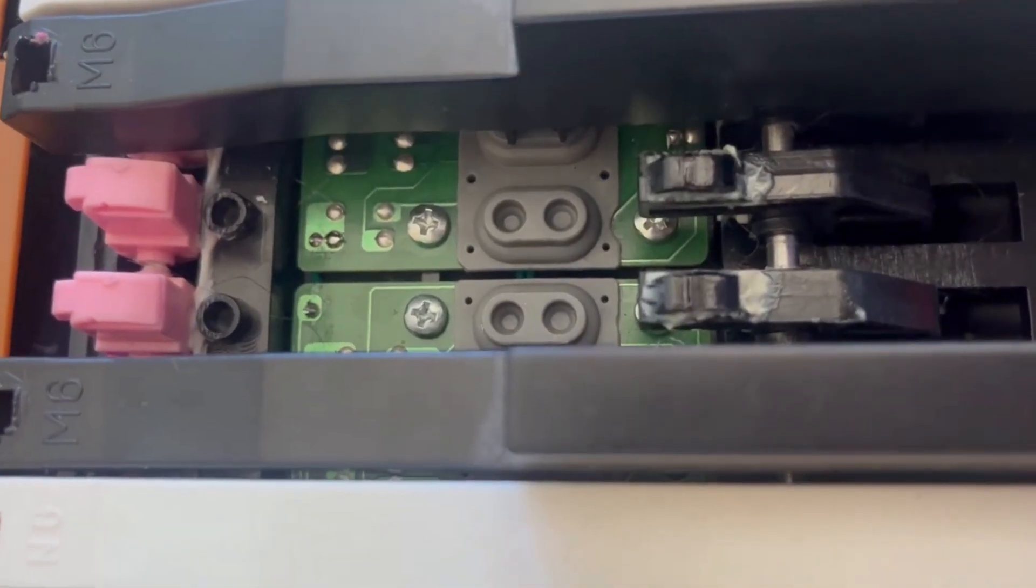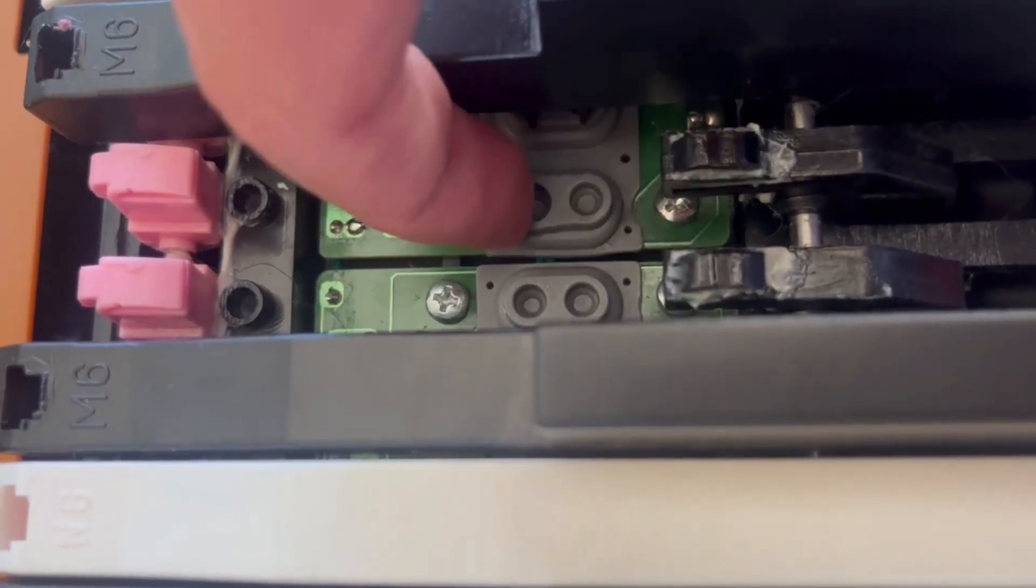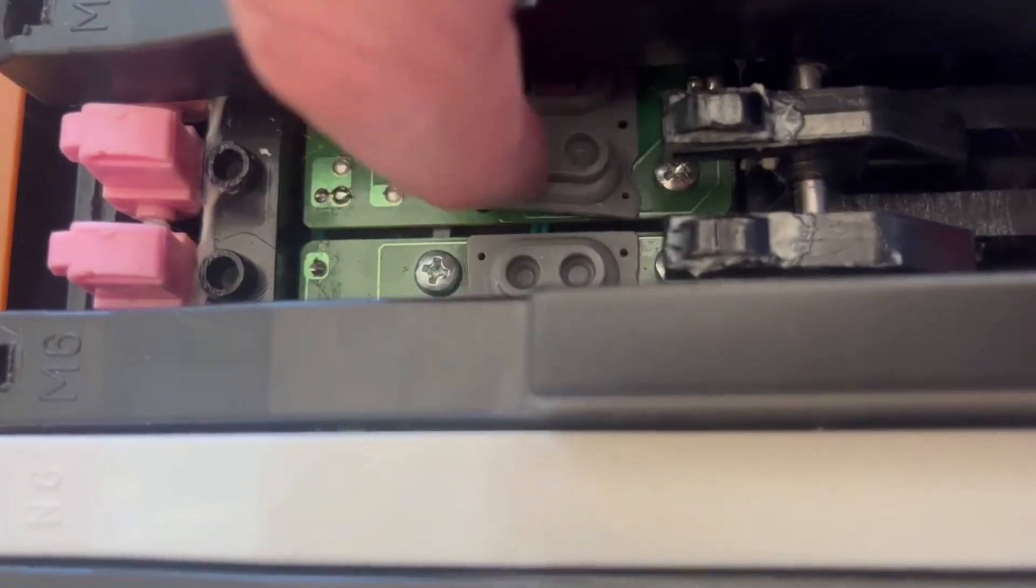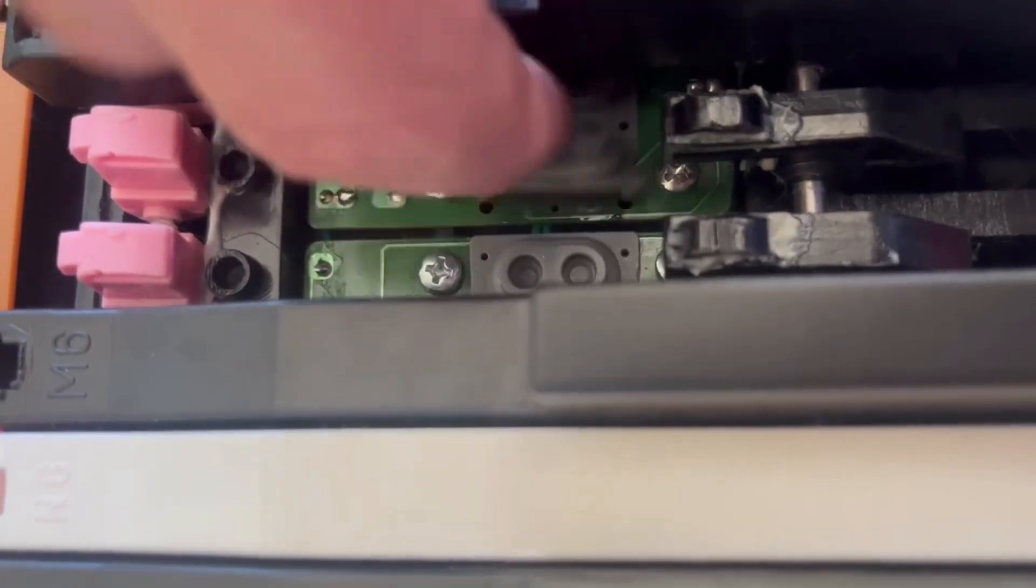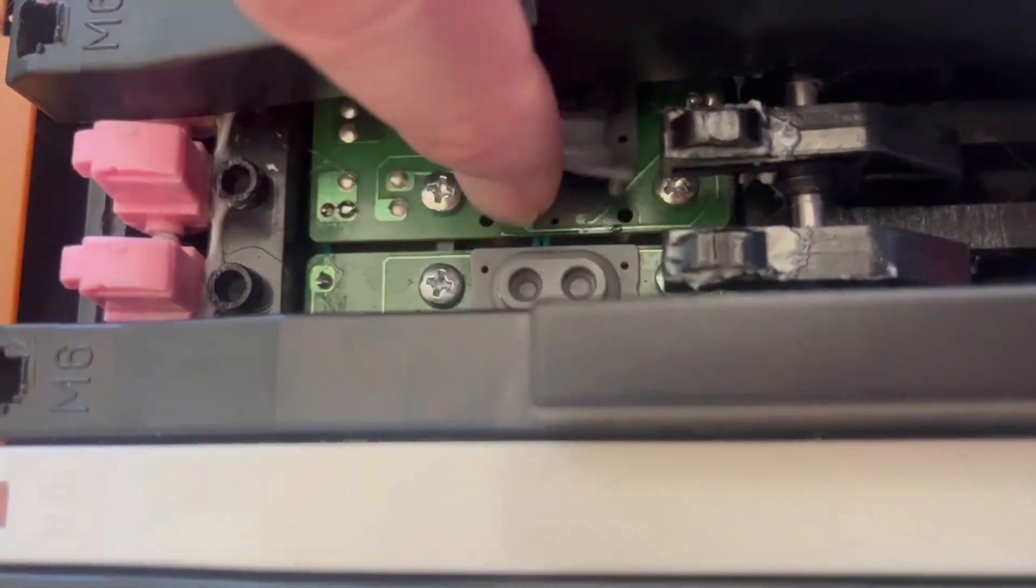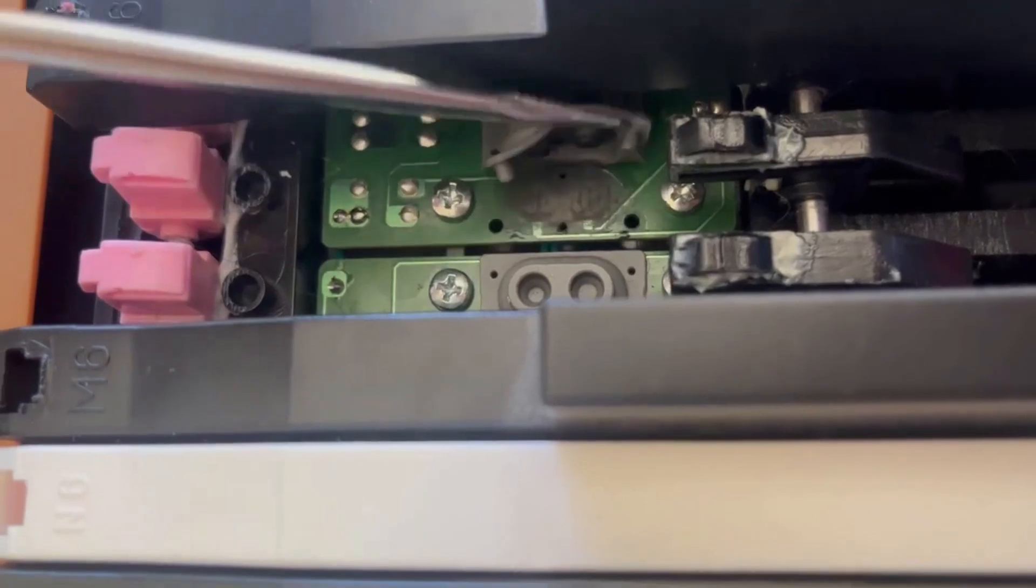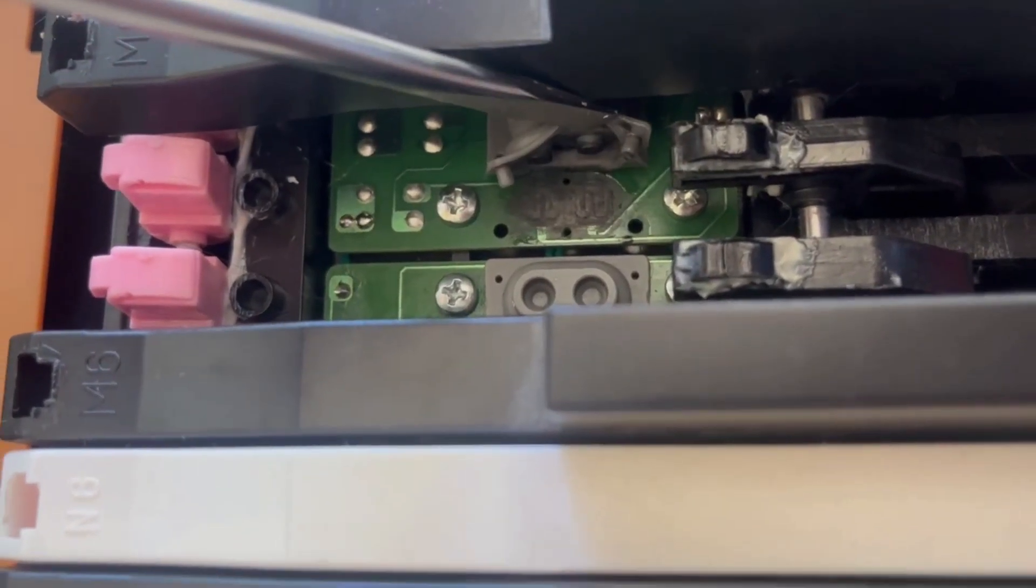You will see underneath the key there is this rubber, and what has worn out is underneath the rubber the contact is worn out. By lifting it up, that is where we'll actually be tracing.